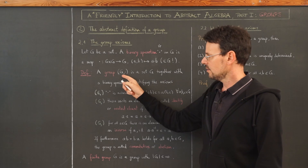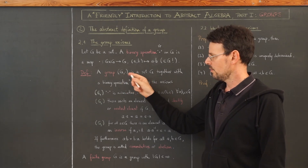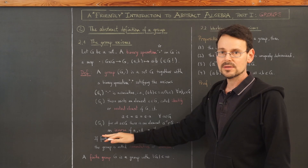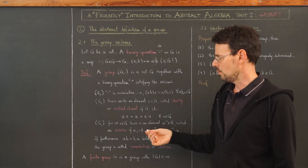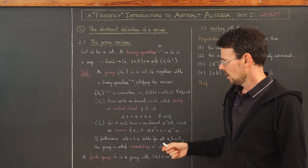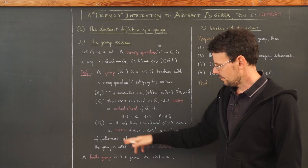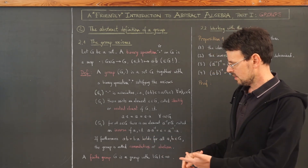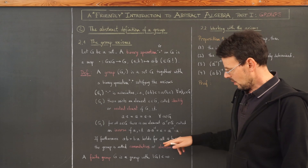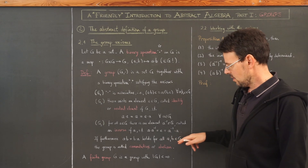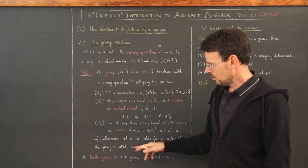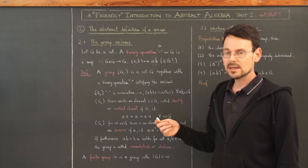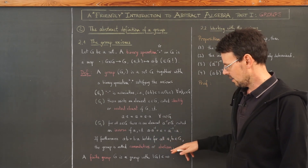If a set together with a binary operation satisfies these three axioms, it is called a group. And if furthermore a·b = b·a for all elements a, b of G, then the group is called commutative — or, to honor Niels-Henrik Abel, it is called abelian.